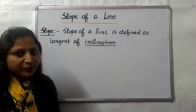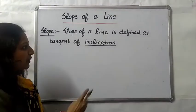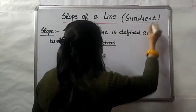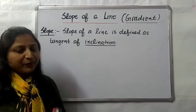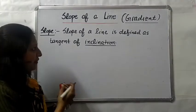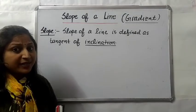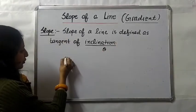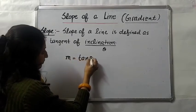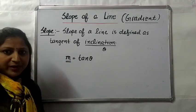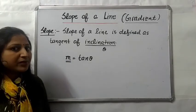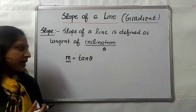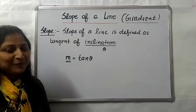Slope is also called gradient of a line. Generally we use slope, but in some books the word gradient is also used. Slope is a number defined as tangent of inclination. We represent inclination by theta and slope by small m, so m = tan θ. If we know the inclination of a line, we can find the slope.